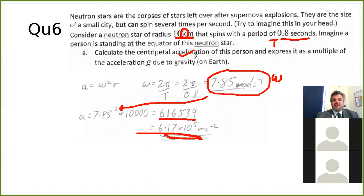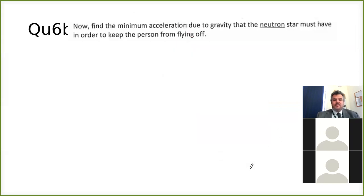But now to express it as a multiple of g, we just divide it by g, which is 9.81. And we end up with 62,800g, which is quite high. So that's how we do that question. And last but not least, I did tell you this would be very quick. We find the minimum acceleration due to gravity that the neutron star must have. Well, the minimum acceleration due to gravity in order to keep the person from flying off, it's got to be the same value, same as part a. So that's pretty simple to do. That's basically how you answer the questions.